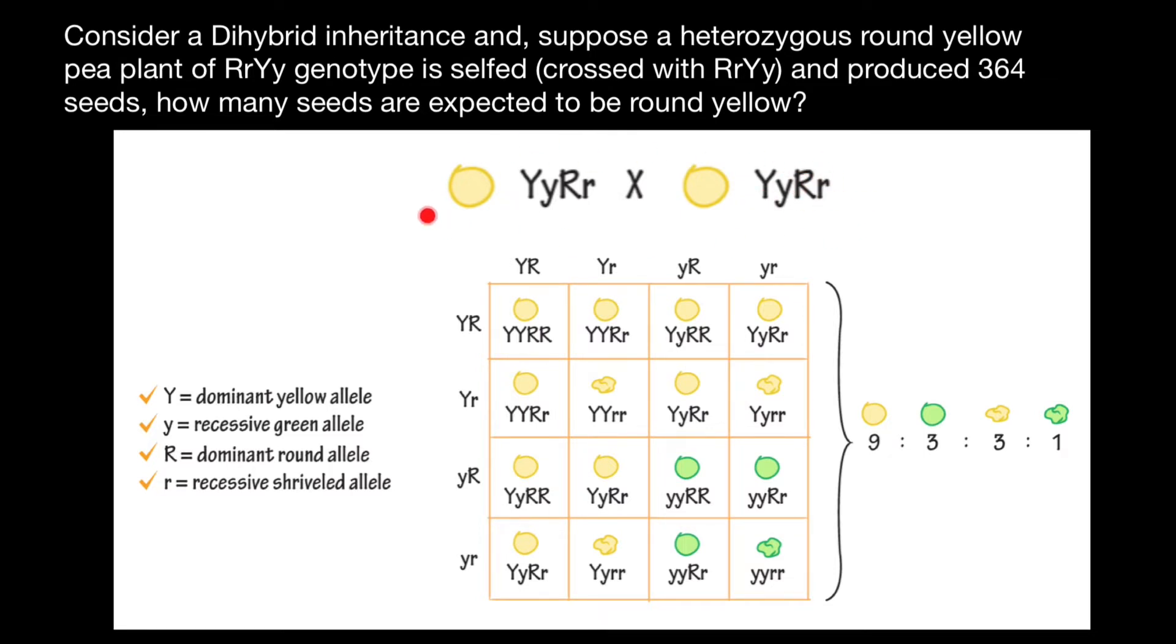We say that this is selfing. So two genotypes which are the same, we cross with each other. One would be male, another would be female. Both parents are dihybrid,